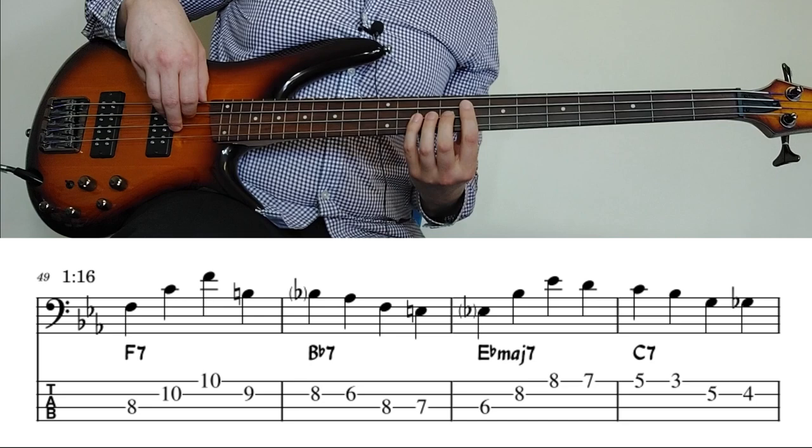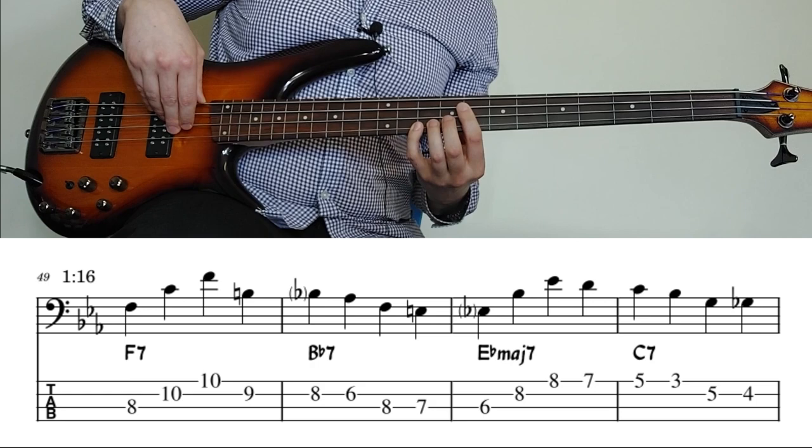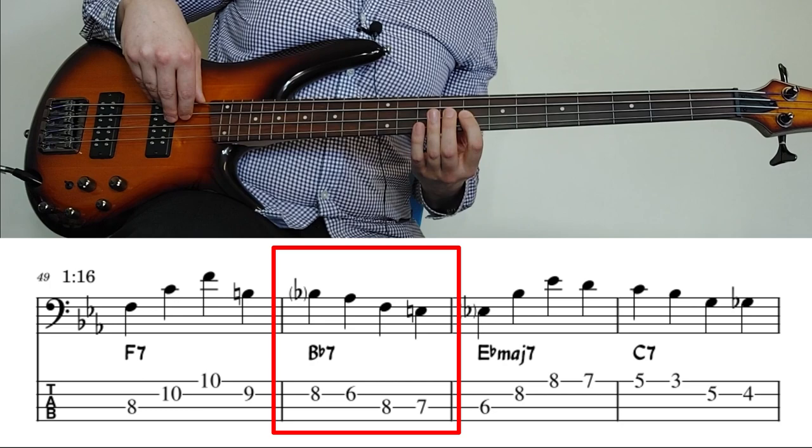And then we get to the final half of the walking bass line. So we're way up on the 8th fret of the A string here. We'll play on F7, root, 5th, octave, leading note, passing note, into Bb7.